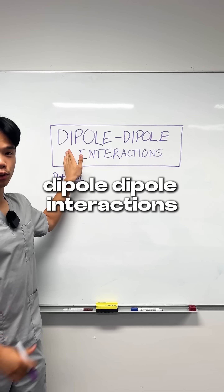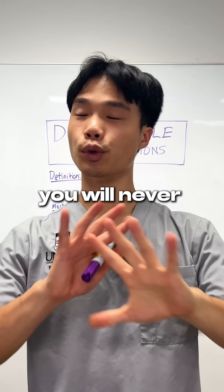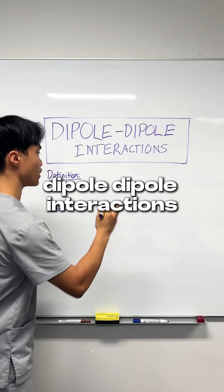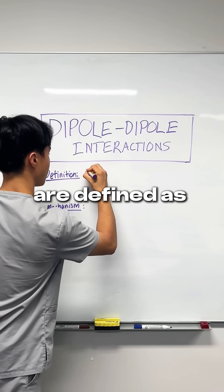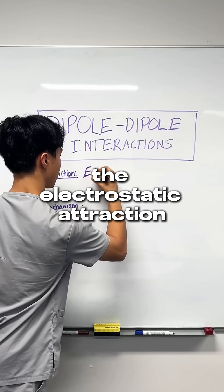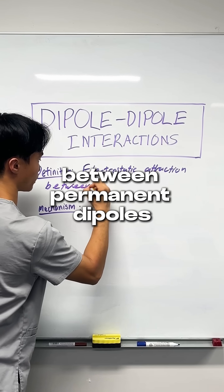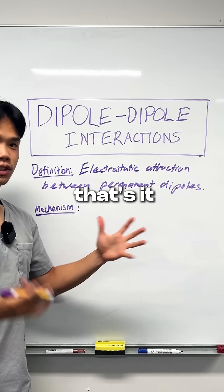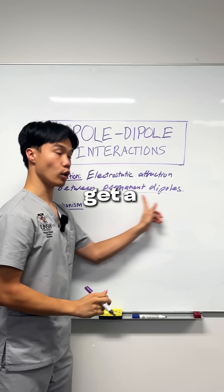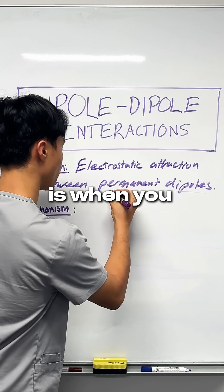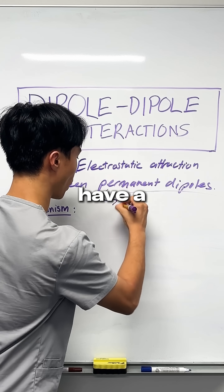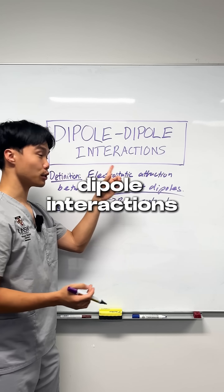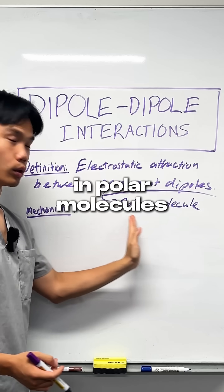If you understand dipole-dipole interactions, you will never lose a mark on intermolecular forces again. Dipole-dipole interactions are defined as the electrostatic attraction between permanent dipoles — five words, that's it. Because the only time you can get a permanent dipole is when you have a polar molecule, you will only form dipole-dipole interactions in polar molecules.